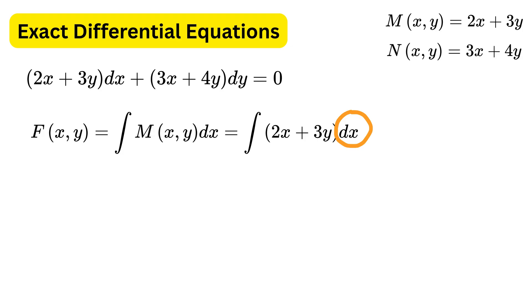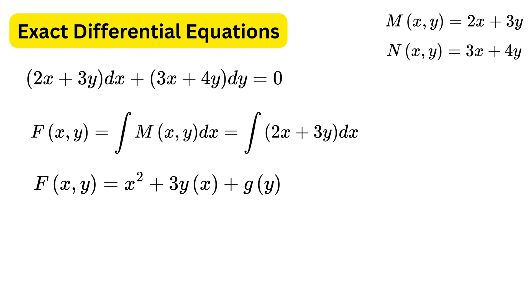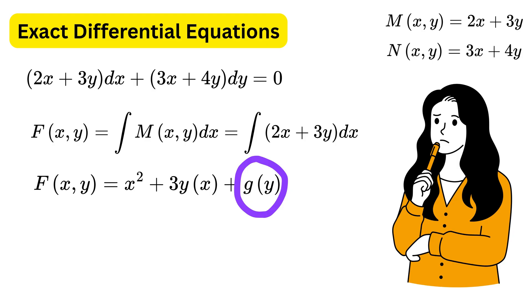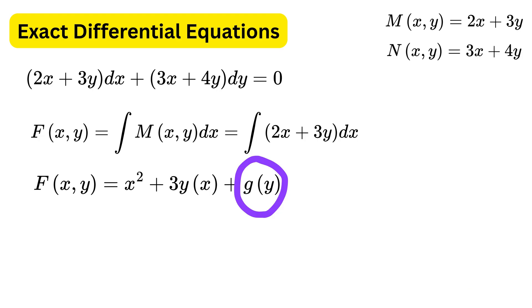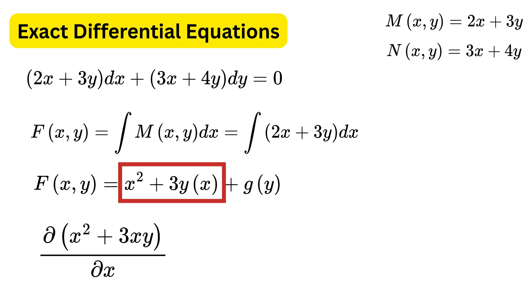Since we are integrating with respect to x only, we treat y as a constant. The integral of M dx gives x squared plus 3y times x plus g(y). You might wonder why we add g(y) here: when integrating M with respect to x, we can handle all parts containing x, but we cannot determine pieces that depend only on y, since they behave like unknown constants from the perspective of x-integration. So we write those leftover y-only contributions as g(y).